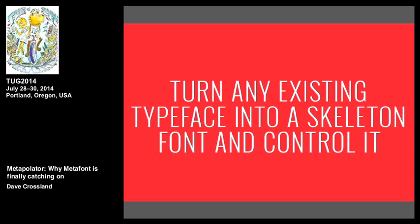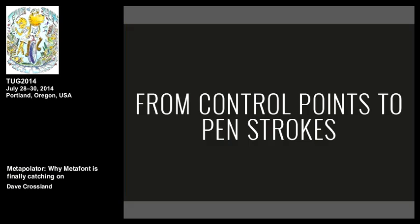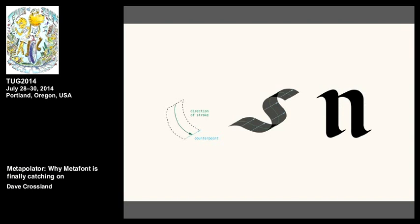Discussing with Simon, I said I really felt like we needed a way to turn existing type designs — which were drawn — into skeleton fonts and control them. You could take an existing design and somehow convert it into a MetaFont, and then get the power of parametric type design. Simon said you could take control points and turn them into pen strokes — a skeleton line for the stroke direction, with offset from that for the port and starboard sides, producing calligraphic shapes we easily recognize in letter forms.